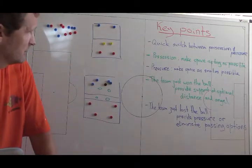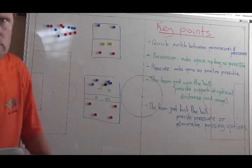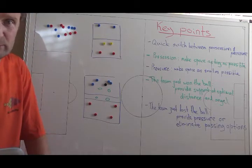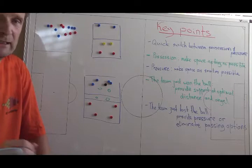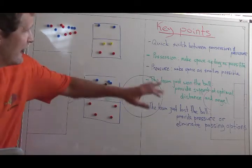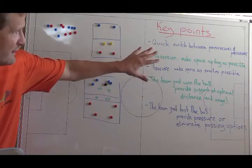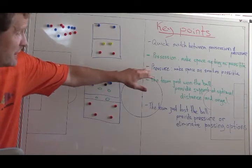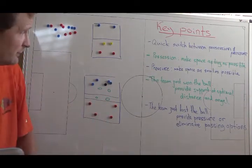The key points are: it's a quick switch between possession and pressure. That's basically what transition is — you either possess and then have to press because you lost the ball, or you were defending and now you have to possess because you just won it. When in possession, players need to think about making space as big as possible.